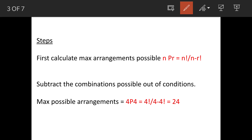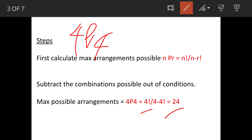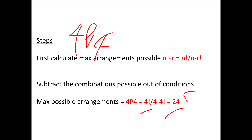We will now see the solution using the formula of permutation and combination. First, we work out the maximum number of arrangements possible. There are four numbers, all 4 to be picked up, so 4P4 equals factorial 4 divided by (4 minus 4) factorial, which equals 24. So 24 are the maximum possible arrangements.